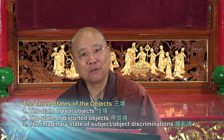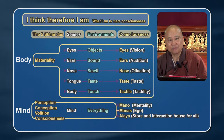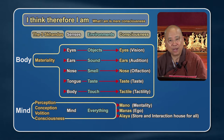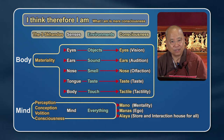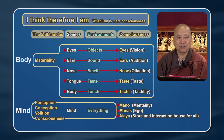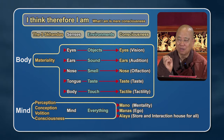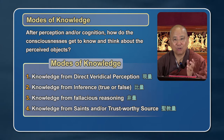Now let's look at something new. We have subject and object, and when our sensory organs perceive objects and interact with them, consciousnesses arise. These consciousnesses depend on the sensory organs — without sensory organs, we don't have consciousness arising. In the process of perceiving objects, how do the consciousnesses get to know, reason, and evaluate the perceived objects? That's the second topic: the modes of knowledge — how you know, how you believe in something.